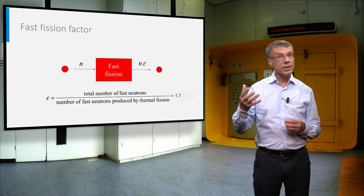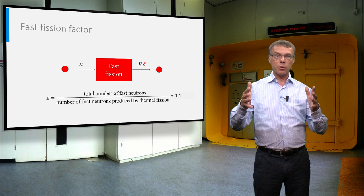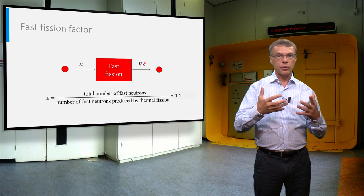In this case, we will gain some neutrons, and if we start with n neutrons, this number will be multiplied by the fast fission factor epsilon, which has a typical value of around 1.1.